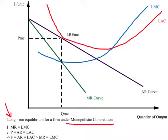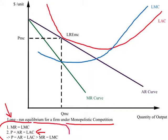This diagram depicts long-run equilibrium for a firm under monopolistic competition. Since we are looking at the long run, we utilize the fourth assumption: free entry and free exit. The consequence is that in the long run no firm under monopolistic competition can make profits or incur losses — they will be in a situation of no profit no loss. To ensure this, price must equal long-run average cost. Here is a list of conditions required for long-run equilibrium.